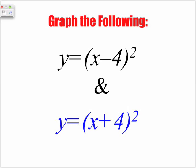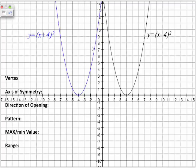Welcome back. So if you've graphed these two, this is the parabola you should be getting. The blue represents y is equal to x plus 4, and the black represents y is equal to x minus 4.